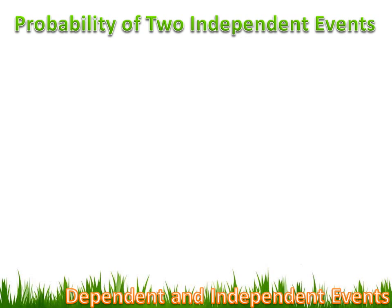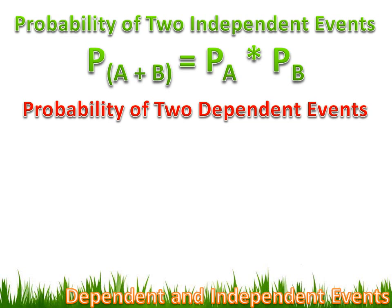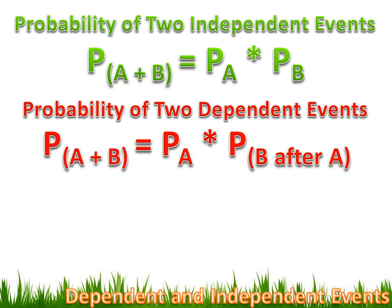So two events are independent if what happens on the first event does not affect the probability of the second event. Two events are dependent if what happens on the first event does influence the probability of the second. To calculate the probability of two independent events, it's simply the probability of each event multiplied together: P(A and B) = P(A) × P(B). But for dependent events, you must calculate differently: P(A and B) = P(A) × P(B after A has happened), adjusted for the outcome of event A.